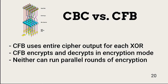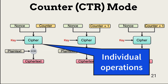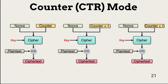Neither CBC nor CFB can encrypt over parallel processors. This is an advantage of counter mode, or CTR. Counter mode does not use XORed plain text with the previous encryption round. Instead, it uses a nonce and a counter. The counter is incremented for each block of plain text passing through the cipher process, and the combination of the nonce and the counter is XORed with the plain text block. This enables parallel processing of multiple blocks of plain text.